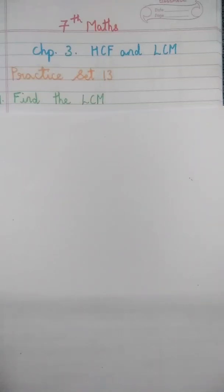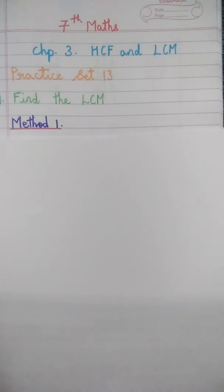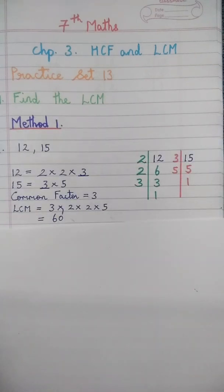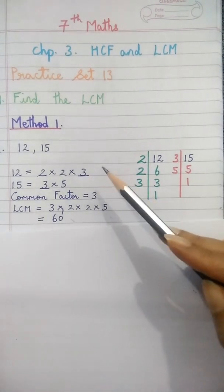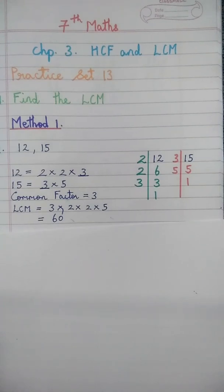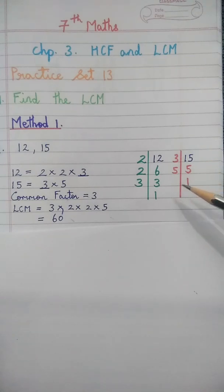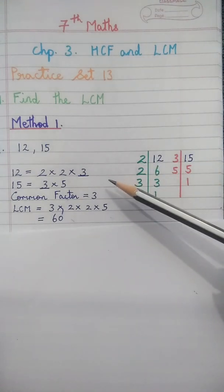Standard seventh maths chapter 3, HCF and LCM, practice set 13. Today let us learn how to find the LCM of the given numbers. Method 1: the numbers given are 12 and 15. We first find the prime factors of 12 and 15, then we write down the factors of 12.